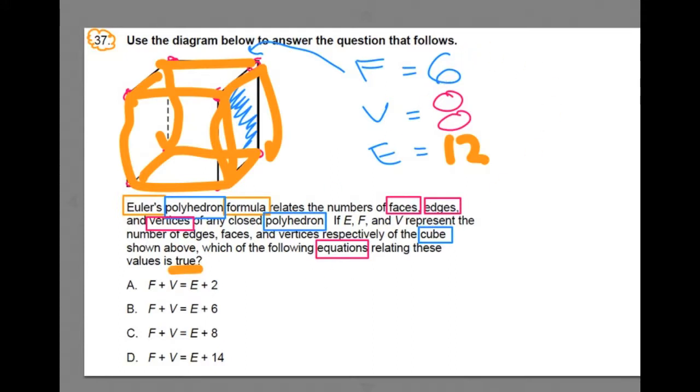...every time you see the variable F, I want you to substitute in six. So we've got six, six, six, six, and everywhere you see V for vertices, I want you to substitute in eight. We've got eight, eight, eight, eight...